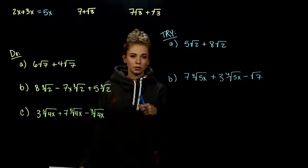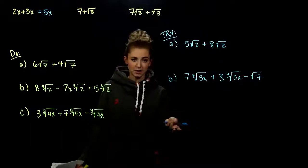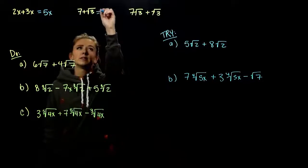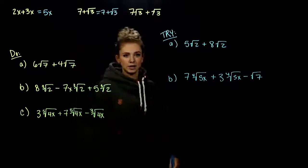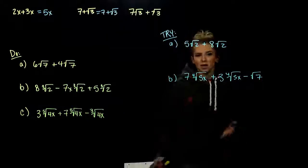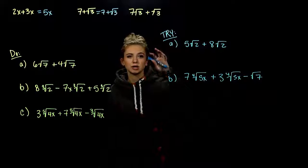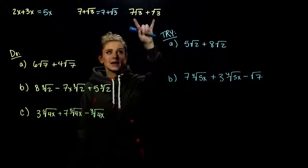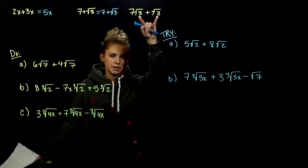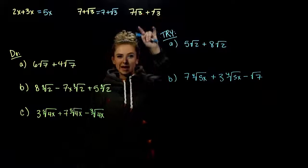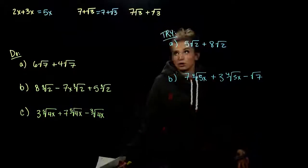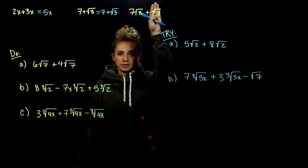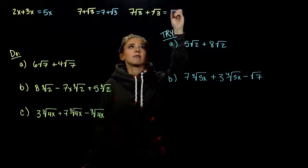Now 7 plus root 3 — they aren't like terms. We can't combine them right now unless we approximate the square root of 3, so we can't simplify this one without a calculator. But the expression on the end does have like terms, because we have the same radical, the same root index, and the same radicand. So we can treat these as a variable — seven factors of whatever's sitting here and one more gives us eight altogether.